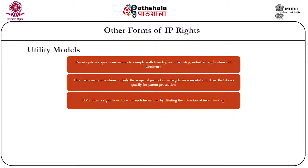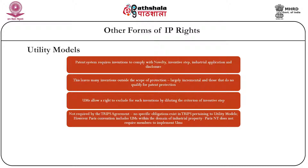Utility models allow a right to exclude for such inventions by diluting the criteria of inventive step and by expediting the process of grant of utility model certificates. There are various mechanisms to resolve the issue of overlapping rights, and different jurisdictions have evolved models differently. There is a lot of flexibility primarily because utility models are not required by the TRIPS agreement — there is no specific obligation in TRIPS pertaining to utility models. However, the Paris Convention includes utility models within the domain of industrial property, though it does not clearly require giving effect to such provisions. What is required under the Paris Convention is that if you have utility models, you must comply with the national treatment provision.